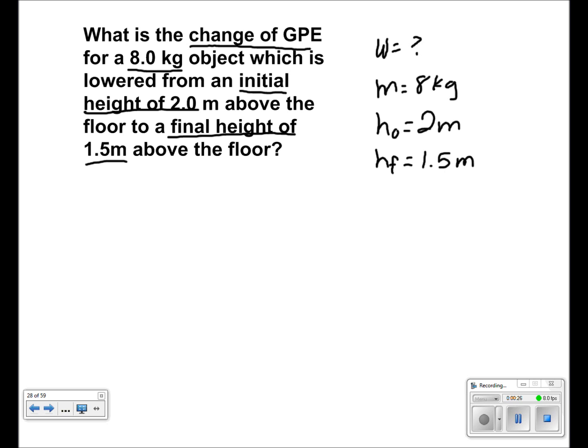So we use the equation, initially, initial energy plus work is equal to final energy. Since we are talking about GPE in this case, initial gravitational potential energy plus work is equal to final gravitational potential energy.